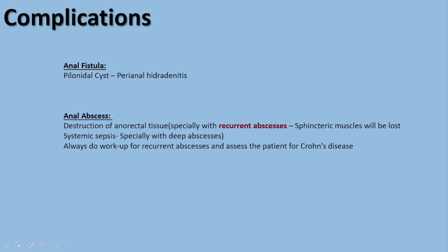The most important complication of anal fistula is pilonidal cyst. Patients can also develop perianal hidradenitis, which is inflammation of the perianal area glands and is quite painful. In anal abscess, recurrent abscesses can cause destruction of anal-rectal tissue and damage to sphincteric muscles, resulting in fecal incontinence. Systemic sepsis is also possible with deep abscesses. Again, recurrent abscesses should always prompt workup for Crohn's disease.